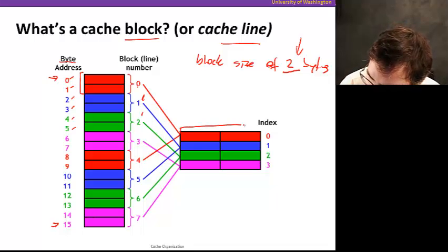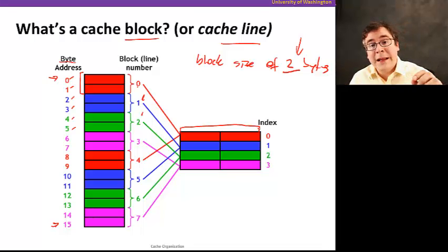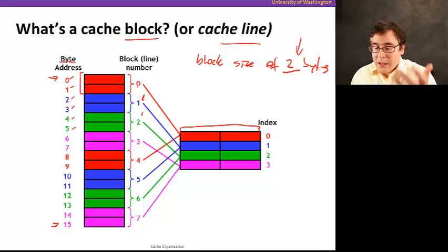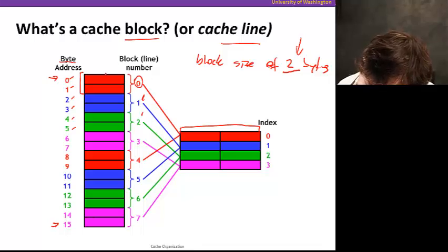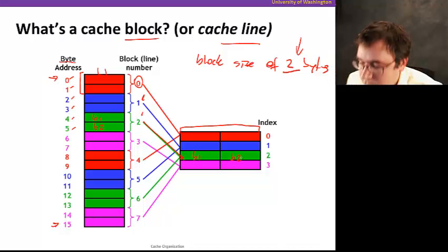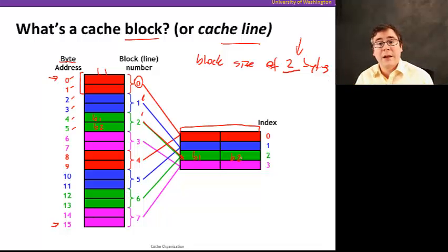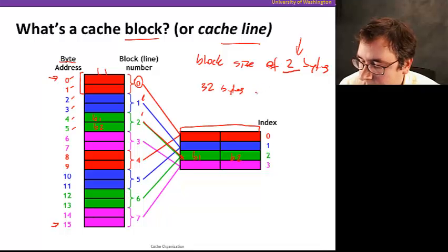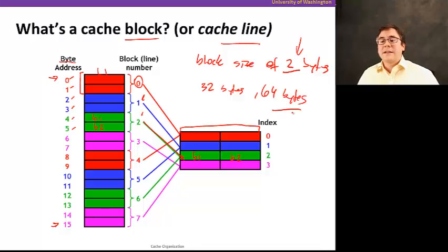Since the cache stores an entire block in an entry, the data array for each index has to be as large as the block. For example, if block 0 is stored in the cache, I store bytes b1 and b2 together. The entire block has to be stored in the cache, so each entry in the data array has to be as large as the block. Typically, cache block sizes are 32 bytes or 64 bytes — this two-byte example is just to keep it simple.